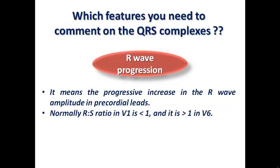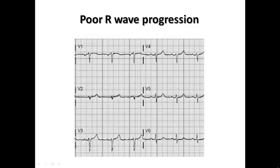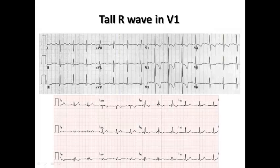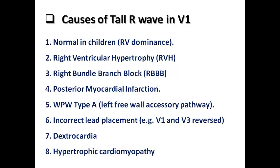Tall R wave in V1 is reversed from normal — normally small R in V1 getting larger toward V6. Causes of tall R wave in V1 include RV dominance (e.g., in children), right ventricular hypertrophy, right bundle branch block, posterior myocardial infarction, Wolff-Parkinson-White syndrome type 1 (caused by left free wall accessory pathway), incorrect lead placement (V1 and V3 replaced), dextrocardia, and hypertrophic cardiomyopathy.